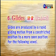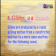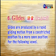下面是 Glides，滑音。Glides are produced by a rapid gliding motion from a constricted position to a more open position for the following vowel. 滑音就是我们嘴形滑过去的，从窄的嘴形到宽的嘴形，比如说「五」。